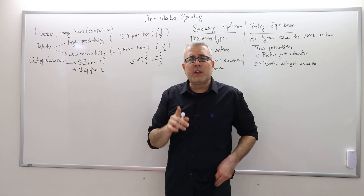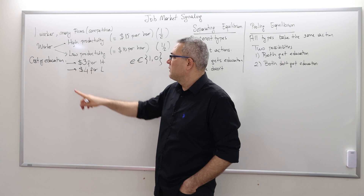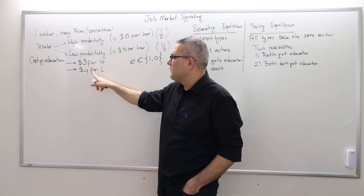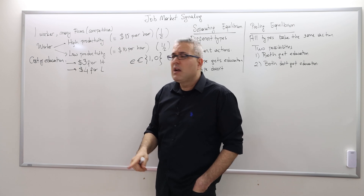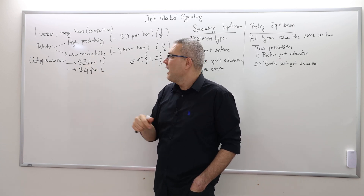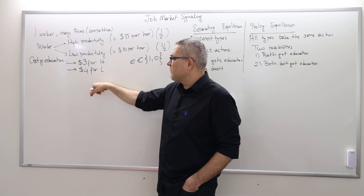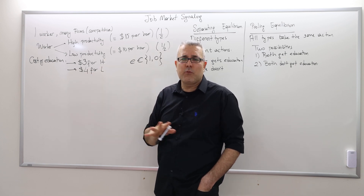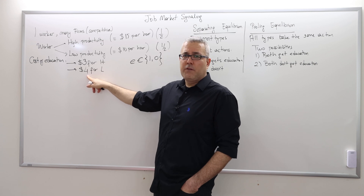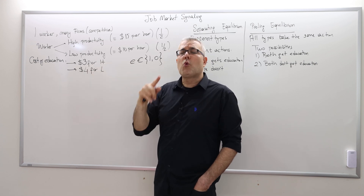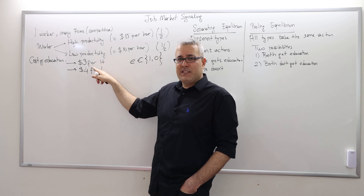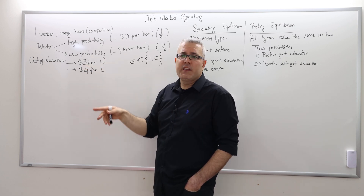In the previous example, the cost of education was $1 for the high type and $6 for the low type. Here, I increased the cost of education for the high type and decreased the cost for the low type. What matters is the education is still more costly for the low type than for the high type.